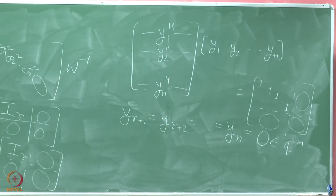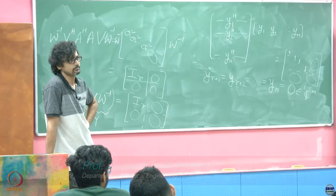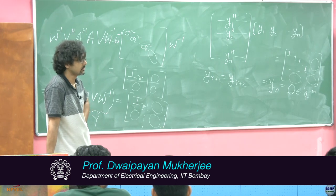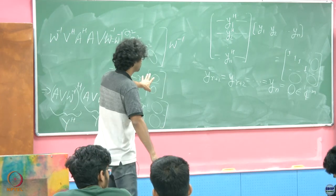So the claim is yr plus 1 equals yr plus 2 equals dot dot dot till yn equals 0 of size m. It must be so if you have to have equality on both sides.